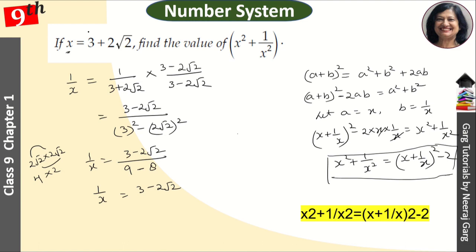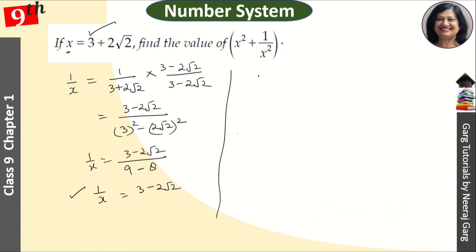We have the value of x, and the value of 1 upon x we got. Now we have to find x square plus 1 upon x square, so first we will find x plus 1 upon x. x is 3 plus 2 root 2 plus 3 minus 2 root 2, and this gets cancelled and this becomes 6.